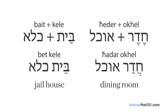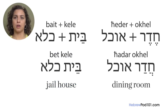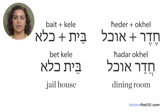Lastly, there is one more issue — perhaps the most confusing one. Sometimes the vowels of the first noun change, like in: 'cheder' plus 'ochel' → 'chadar ochel' (dining room), and 'bayt' plus 'kele' → 'bayt kele' (jailhouse). Most Hebrew speakers don't know these complicated rules — they simply learned how to use smichut growing up. For Hebrew learners, the more Hebrew you hear and speak, the more natural it will become.